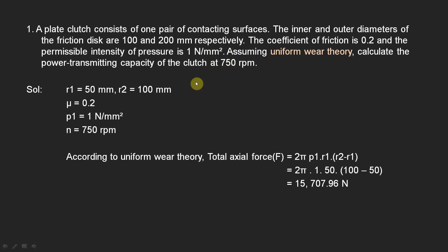And speed is 750 rpm, so n is 750. According to uniform wear theory, total axial force F is equal to 2π p1 r1 (r2 - r1). We have the values, we can substitute: p1 is 1, r1 is 50, r2 is 100, and r1 is 50.